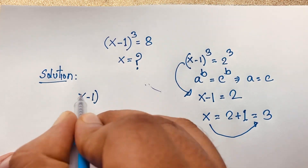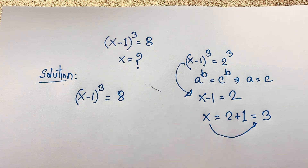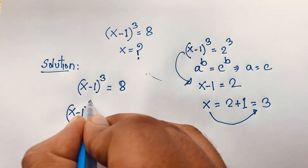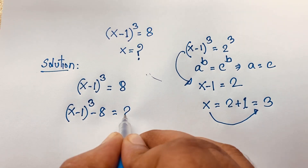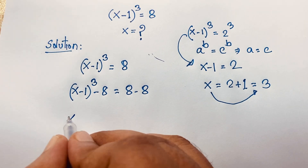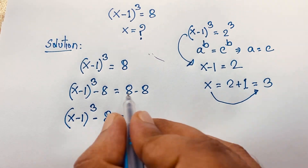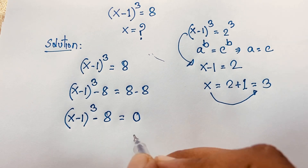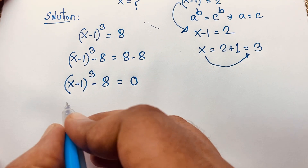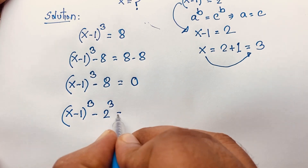Starting again with (x minus 1)³ = 8. I subtract 8 from both sides: (x minus 1)³ minus 8 = 0. Now I rewrite 8 as 2³, giving us (x minus 1)³ minus 2³ = 0.